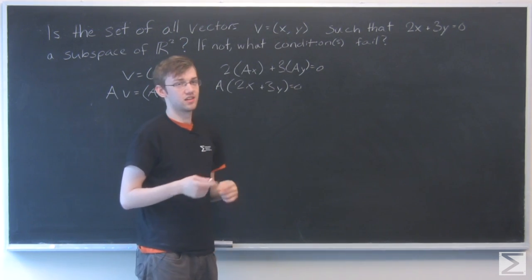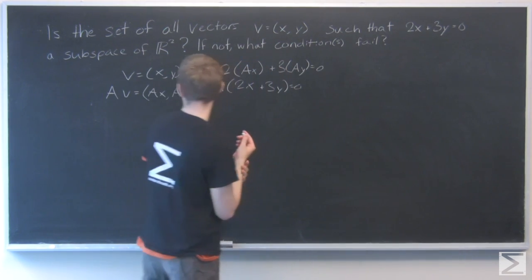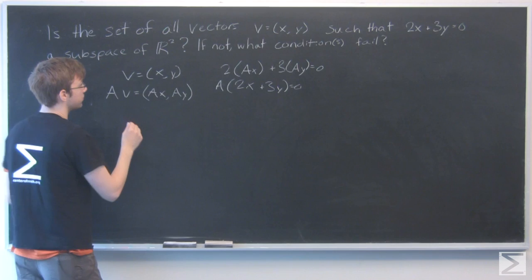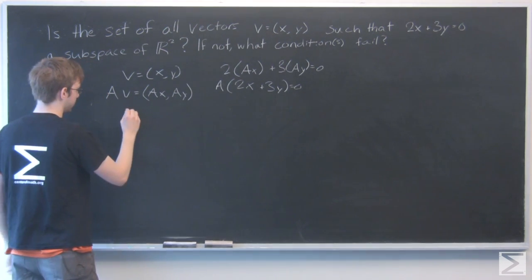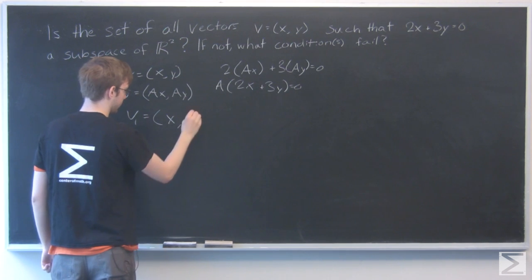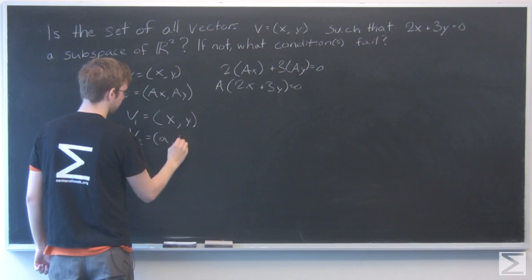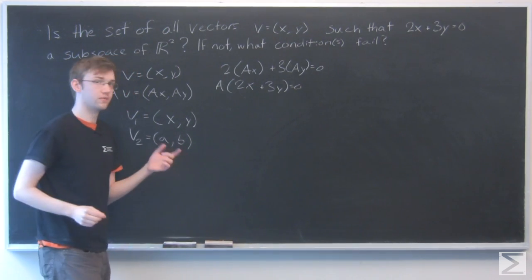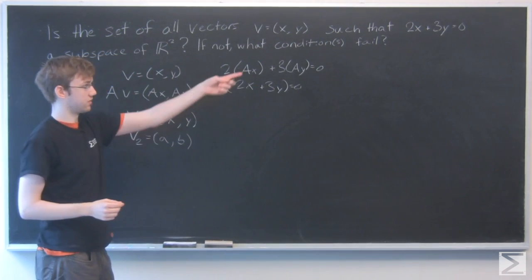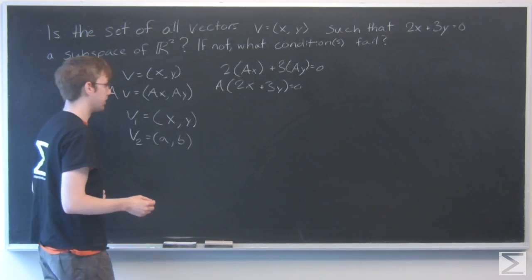Now let's check if addition holds. We're going to define two members of this set: v1 = (x, y) and v2 = (a, b). We're saying that these are both members of the set, meaning that the 2x + 3y property holds for both of them. Now I'm going to add them together.